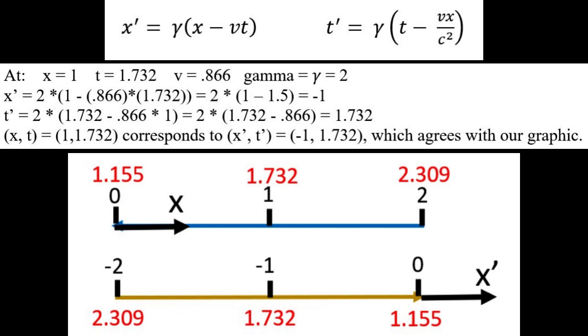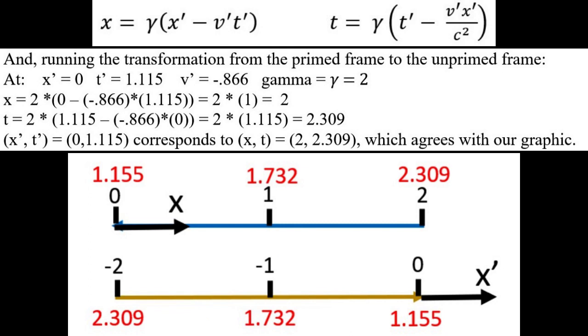In a similar way, the data pair of x t equals 1, 1.732 corresponds to x prime t prime of minus 1, 1.732 after plugging into the same equation.